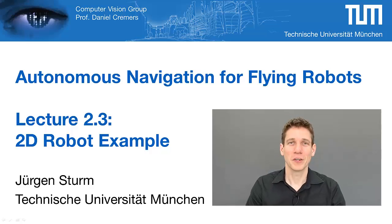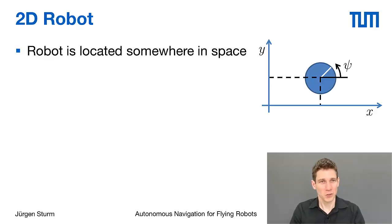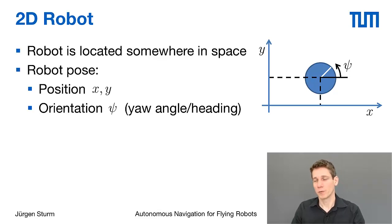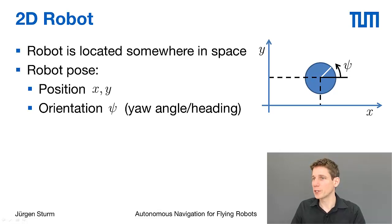Welcome back everybody. In this video I will give you a short example on 2D geometry for a planar robot. Imagine that we have a simple robot located somewhere in 2D space. We could describe its pose by its position in x and y direction and its rotation around the yaw axis. This means that this robot has 3 degrees of freedom, namely a 2D translation and a 1D rotation or orientation.